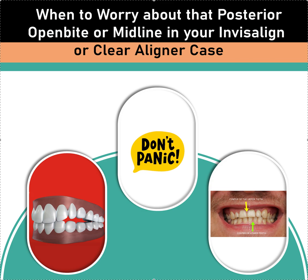The other thing that comes up often is you start to see a little bit of a posterior open bite during treatment, but everything is tracking and the ClinCheck or ClearPilot setup looks reasonable. In that case I don't always get worried. Obviously if the patient is a crazy bruxer or clencher, we might need to consider some masseter Botox, and if we don't already have anterior bite turbos on the case, now is probably a good time to refine and put those on.